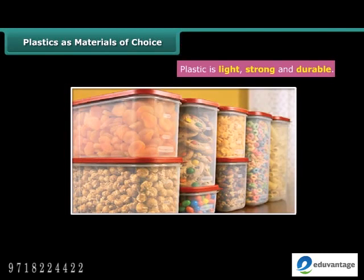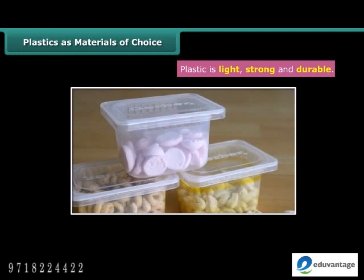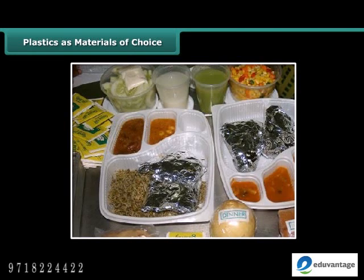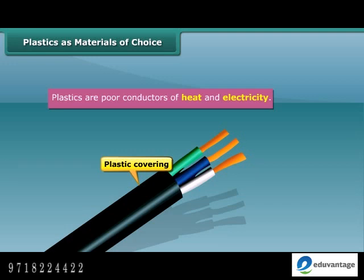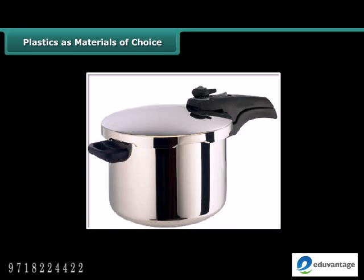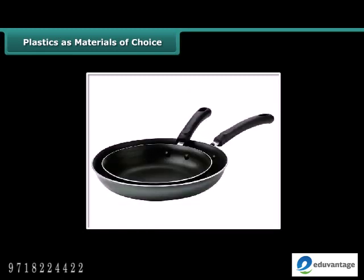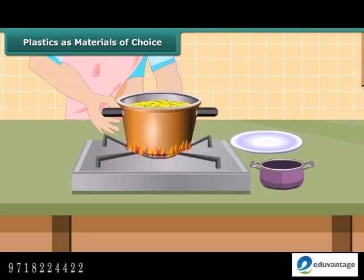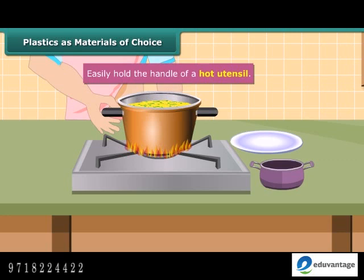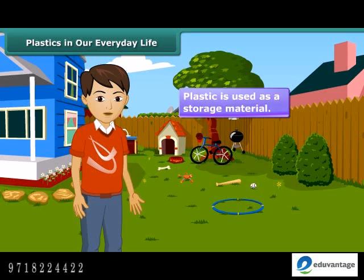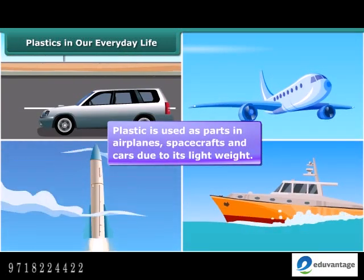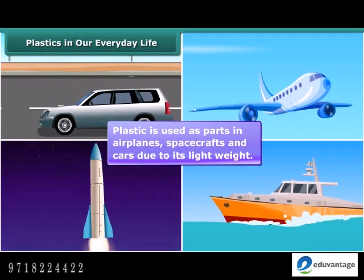Why are plastics so widely in use? Plastic containers are mostly used for the storage of food grains, pickles, salt and spices since these are relatively non-reactive and impermeable to moisture. Since plastic is a poor conductor of electricity, electrical wires have plastic covering. Plastics being poor conductors of heat, we can easily hold the handle of a hot utensil. It is used as parts in airplanes, spacecrafts and cars due to its light weight and strength.